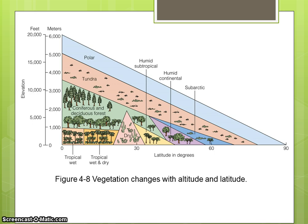Early plant geographers correlated the distribution of vegetation to climate. The world could be divided into zones representing broad categories or formations of vegetation based on physical appearance. Whittaker first noted that biome types form in response to a distinctive climatic pattern. Topography, soil type, and disturbance exposure can also influence the occurrence of a biome.